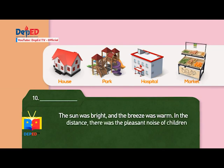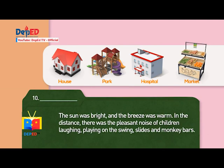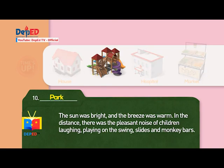Number ten: The sun was bright and the breeze was warm. In the distance, there was the pleasant noise of children laughing, playing on the swings, slides, and monkey bars. Clues: A house. A park. A hospital. A market. Answer: A park.